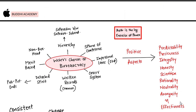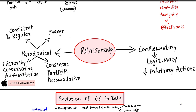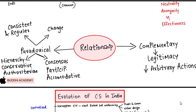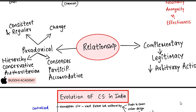हम Weberian model of bureaucracy को देख चुके हैं। इस lecture में मैं कोशिश करूँगा आपको समझाने की कि किस तरीके की relationship होती है between civil services and democracy। इस relationship को मैं दो terms में बताऊंगा - एक paradoxical और दूसरी complementary। Paradoxical में मैं बताऊंगा कि civil services अलग तरीके से काम करती है जबकि complementary में बताऊंगा कि civil services democracy को compliment करती है।